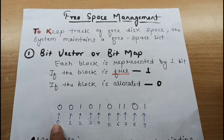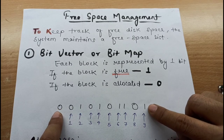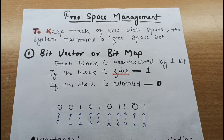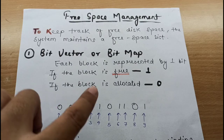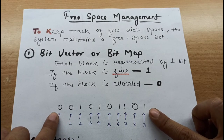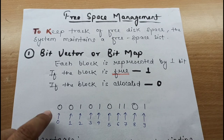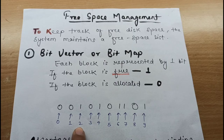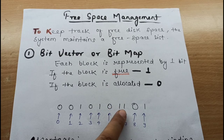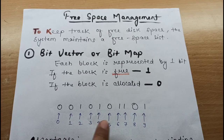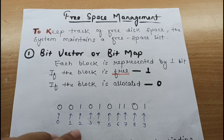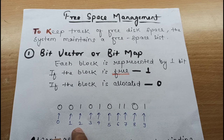Let's look at the bit pattern. Whenever we create a new file and need to assign it a block, we go to this bit vector or bitmap and find the bit pattern. Assume there are only ten blocks; based on this bit pattern, block numbers 2, 4, 6, 7, and 9 are set to 1, meaning these blocks are free and can be assigned to a file needing free space.